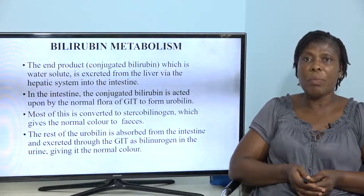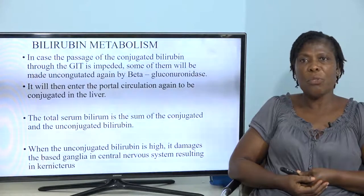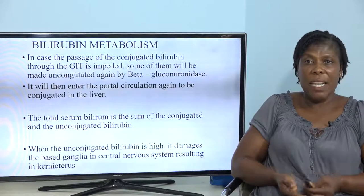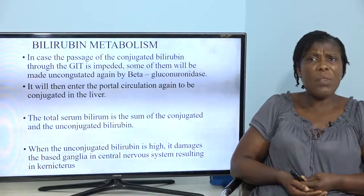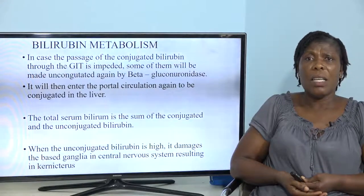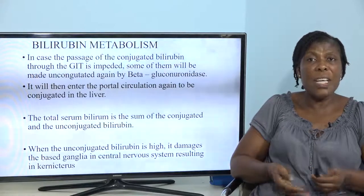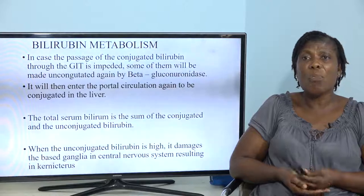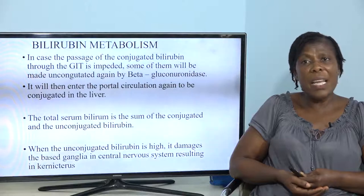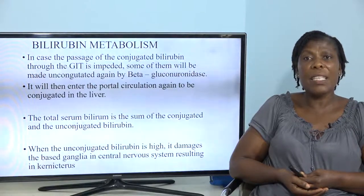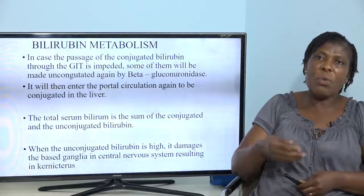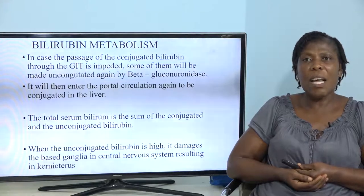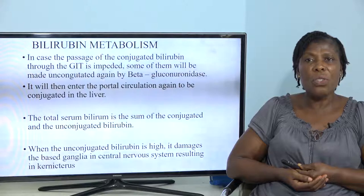In case the passage of the conjugated bilirubin through the GIT is impeded, some of it will be made unconjugated again. When made unconjugated — the insoluble form that cannot be excreted — it keeps on flowing in the body system, bringing about changes in the skin color. It then enters the portal circulation again to be conjugated in the liver. So it's like a cycle — it goes and comes back. The total serum bilirubin is the sum of conjugated and unconjugated bilirubin.